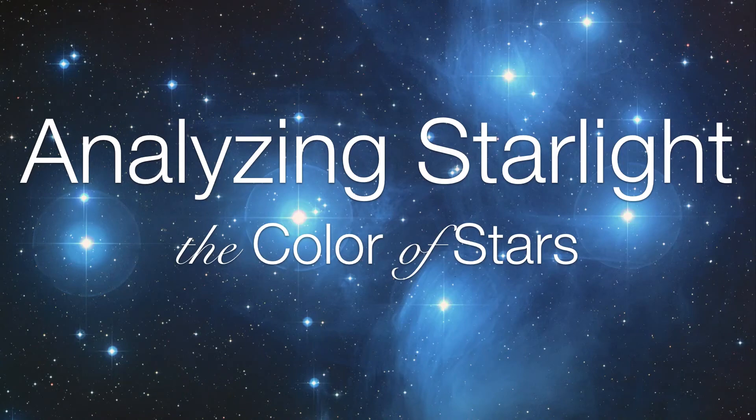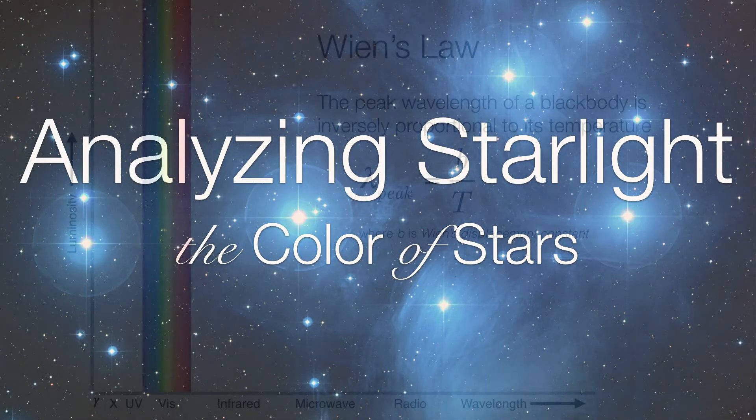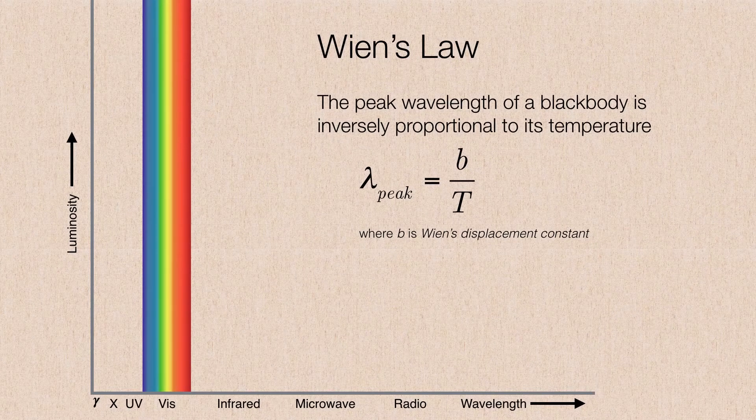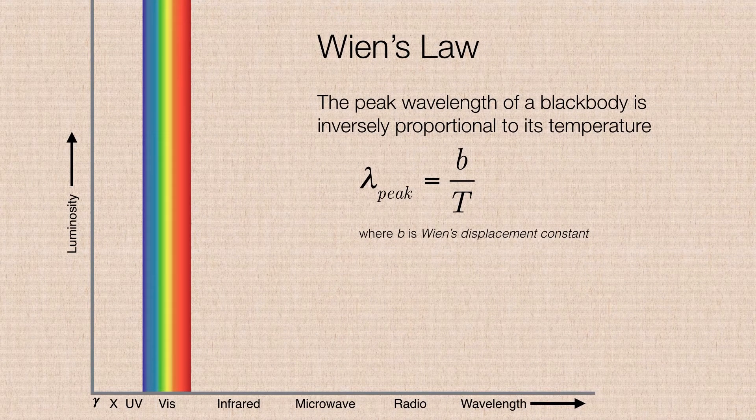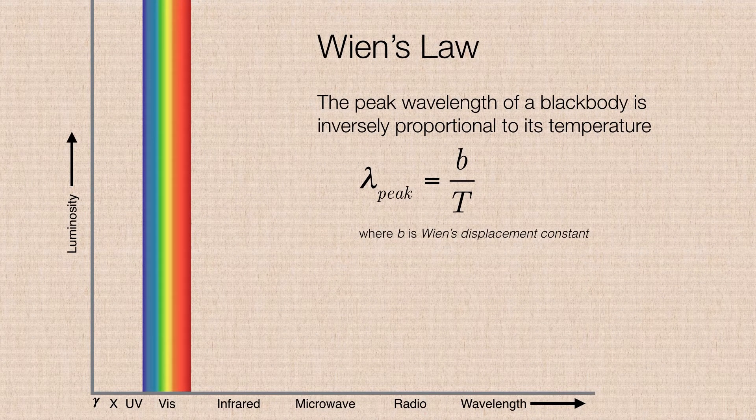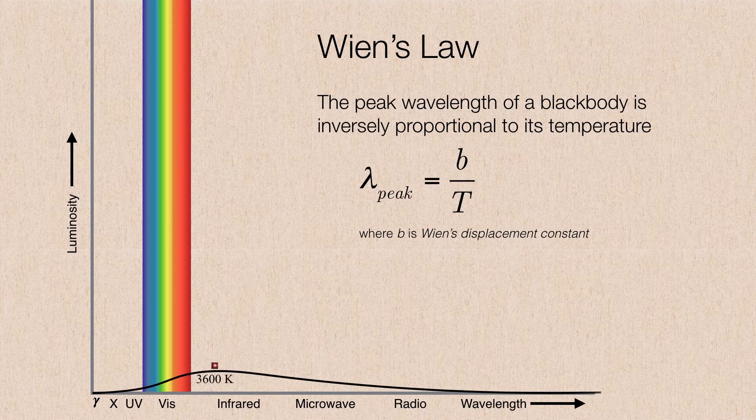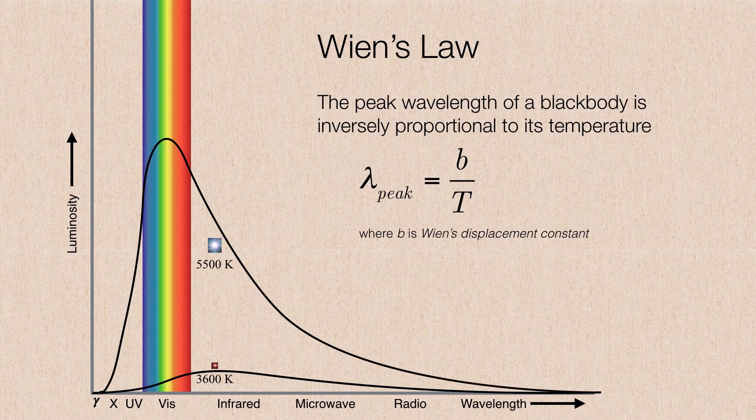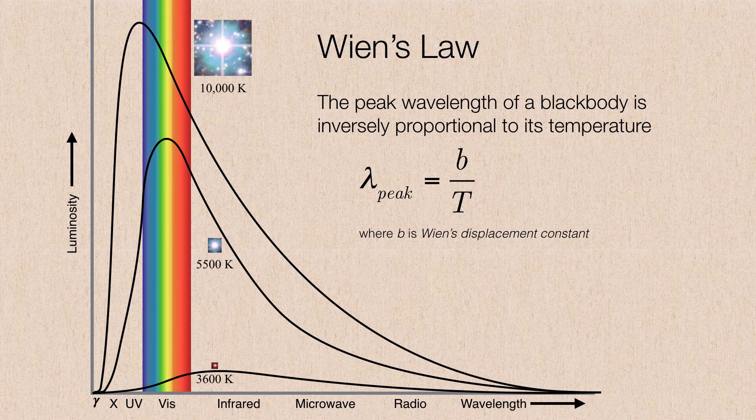We've talked about the relationship between temperature and color, and if you recall Wien's law, it says that for any black body or anything that radiates like a black body, such as a star, we can compare the relative temperatures of stars and we can see that there's also a relationship between the color.